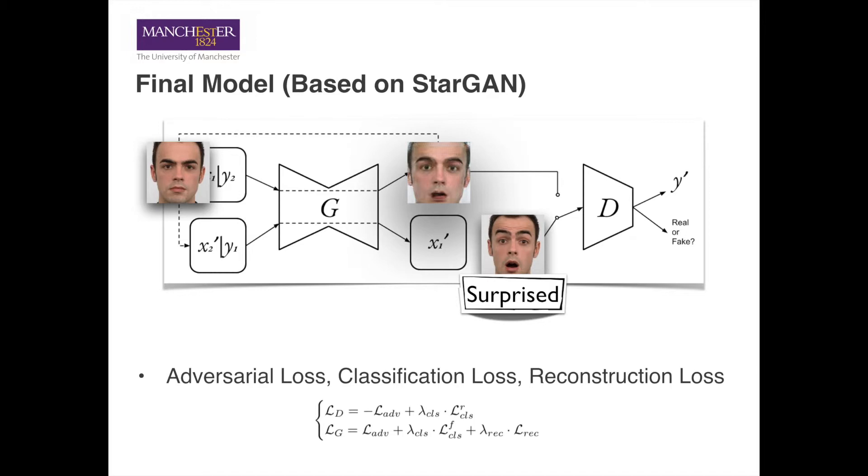By comparing the results of the discriminations with the ground truth, we can calculate the values of the usual objectives of GANs. Here, we call it adversarial loss. Given the real image, we want the discriminator to predict it as true and classify it into its original expression.